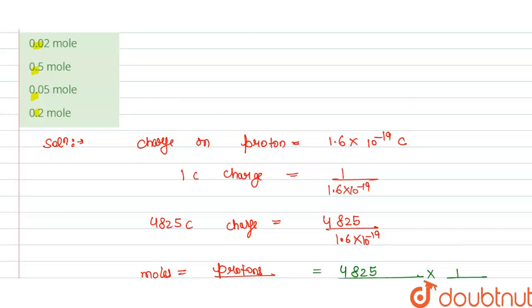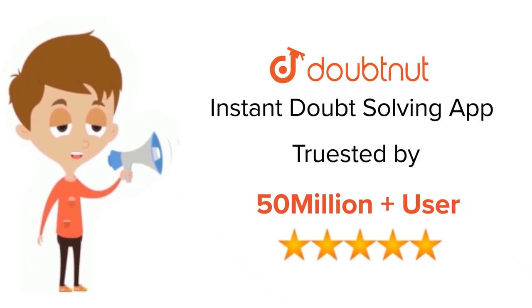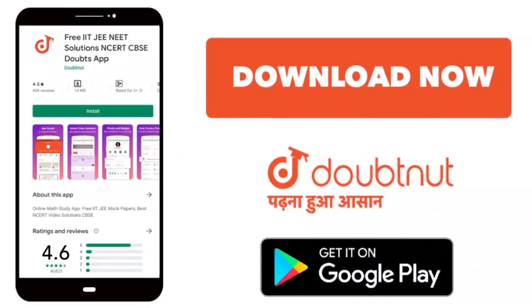So from this we can say that our option C is correct. Thank you. For class 6th to 12th, IIT-JEE and NEET level, trusted by more than 5 crore students, download Doubtnet app today.